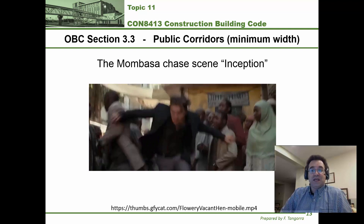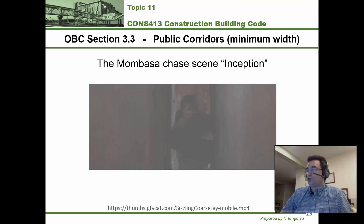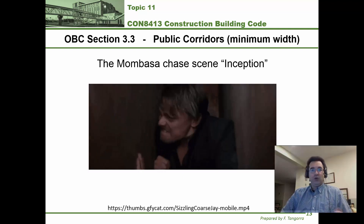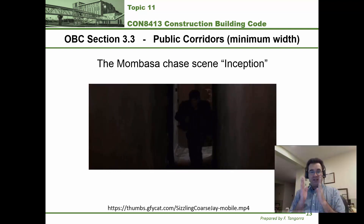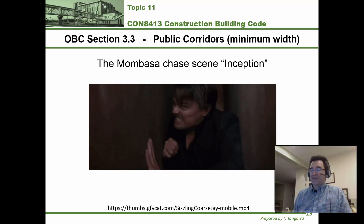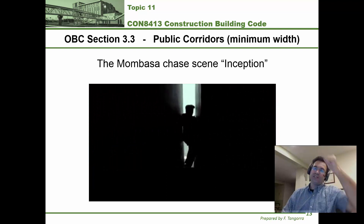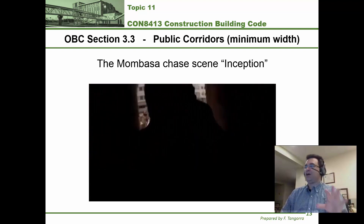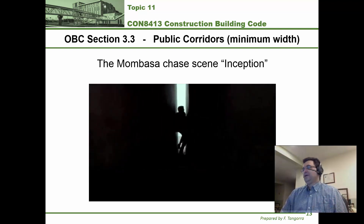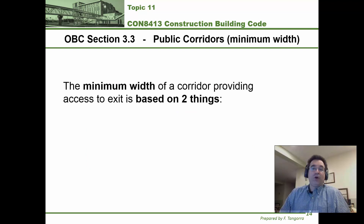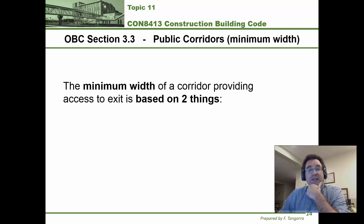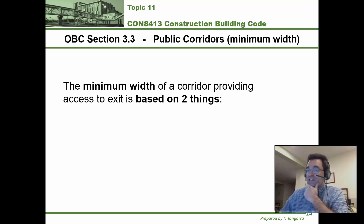the protagonist sees an alleyway. There are no people there, so he turns into this alleyway — but the walls are so close together that the protagonist has now become stuck. With the bad folks chasing after him, he finally squeezes through. The reason I brought this scene up is because it helps illustrate what the building code requires in terms of minimum widths of public corridors for access to exits.